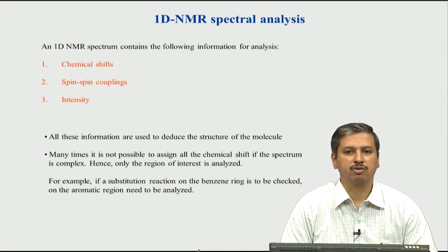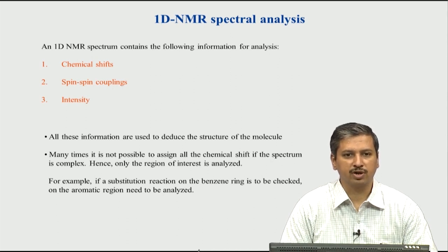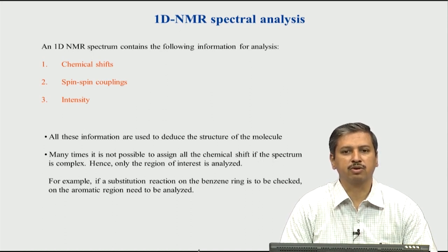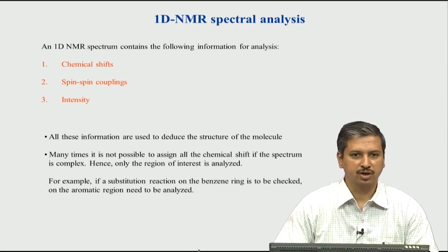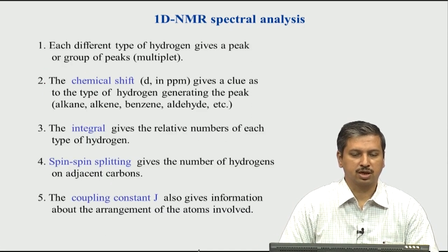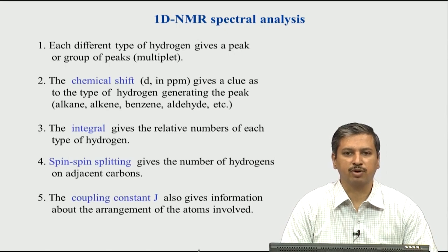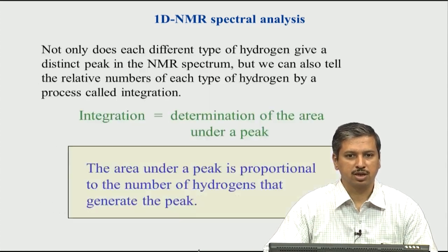But if you are only looking at changes in the spectrum — for example, you have a reaction going on and you know the starting compound, and you have already analyzed the spectrum of the starting compound — then you are only interested in changes happening in the molecule upon substitution or any reaction. In that scenario you do not have to reanalyze the full spectrum; typically what is done is we only look at the region of interest. This is a repeat of the previous slide: what are the different parameters we have to focus on in an NMR spectrum so that we can analyze it.